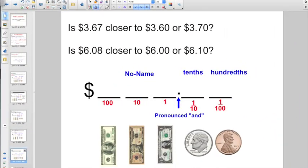Check out this one. Is $3.67 closer to $3.60, or $3.70? Well, let's take a look here. It is seven cents away. Seven cents difference between $3.67 and $3.60. From $3.67 to $3.70, that's only three cent difference, right? Which one is it closest to? $3.70, because that's only three cents away.